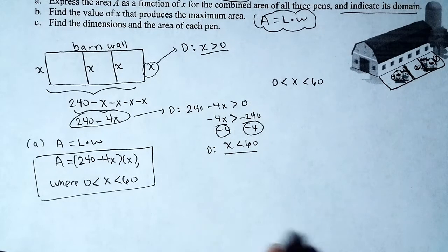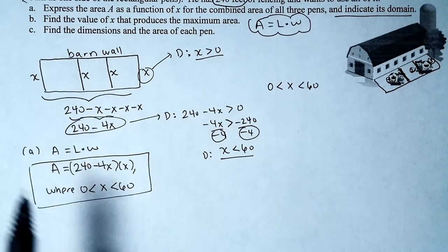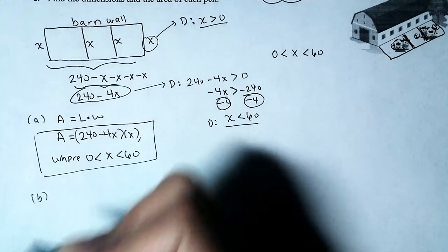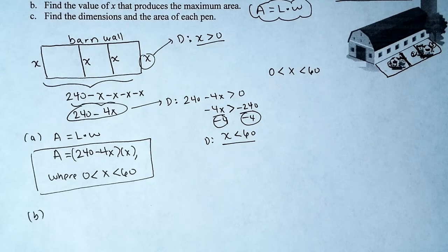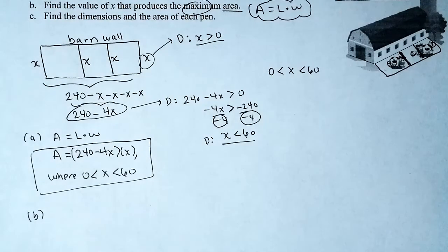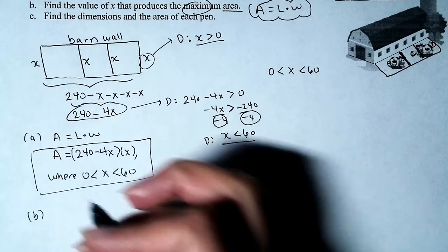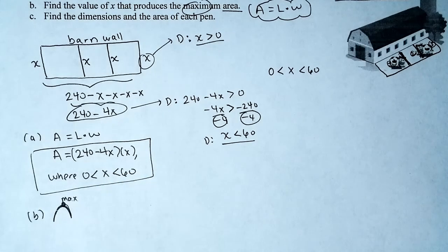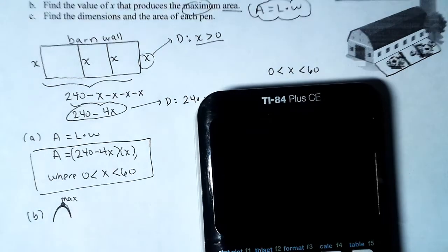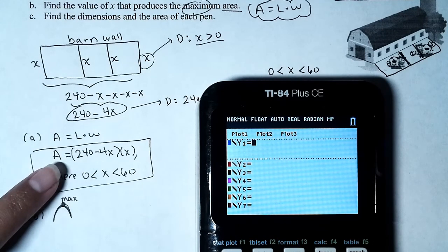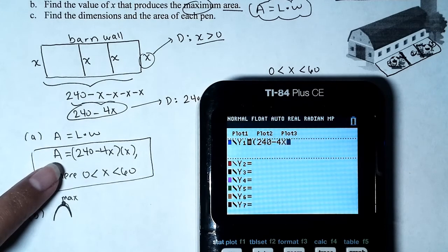Part B: find the value of x that produces the maximum area. You can answer algebraically or graphically — I'm going to use the calculator. When thinking about a maximum visually, I need to see a peak or hill on the graph. Our function is A = (240 minus 4x) times x.